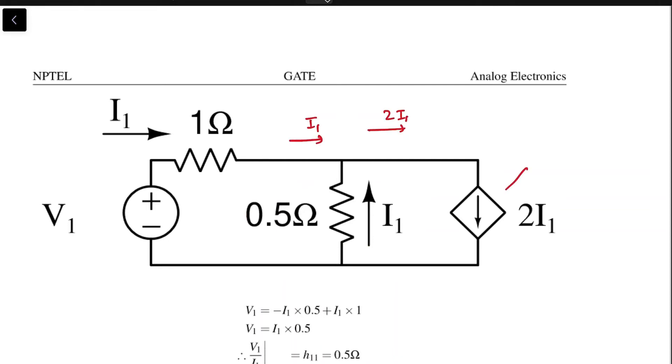If this is i1 and this is 2i1 (that's the dependent source 2i1), it must be that this is i1, because KCL has to be satisfied at this node. So if this is i1, then the voltage drop here is i1 times 0.5.